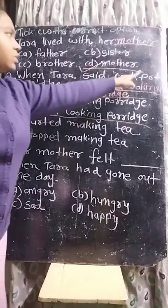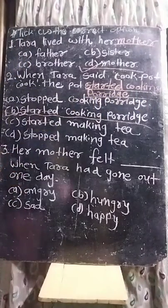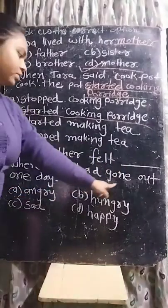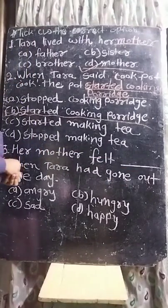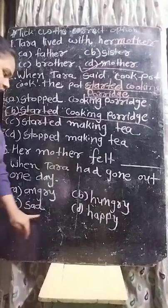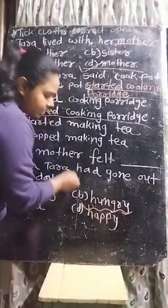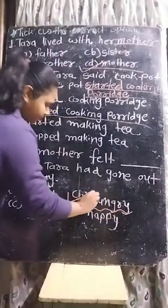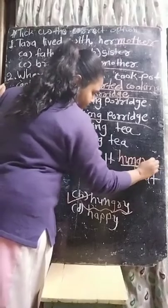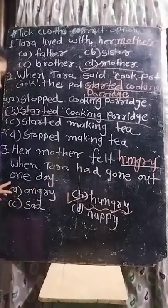When Tara said 'cook pot cook,' the pot started cooking porridge. Third one: Her mother felt — when Tara had gone out. (Tara ke bahar jane par maa ne kya feel kiya?) Answer: Her mother felt hungry when Tara had gone out.